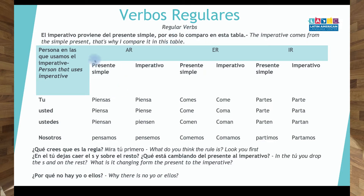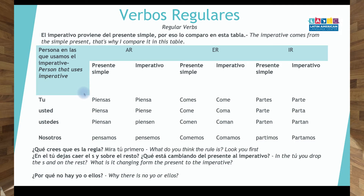Let's start with the regular verbs first. I'm going to compare with the present simple because the imperative comes from the present simple. I want you to think: why do you think you don't have 'yo' or 'ellos' in the imperative? Well, you don't have 'yo' or 'ellos' because if you're giving a suggestion or an order, you're directing yourself to somebody else. 'Ellos' will listen to you, and 'yo' — generally you don't give an order or suggestion to yourself. So that's why you have 'tú,' 'usted,' 'ustedes,' and 'nosotros.'